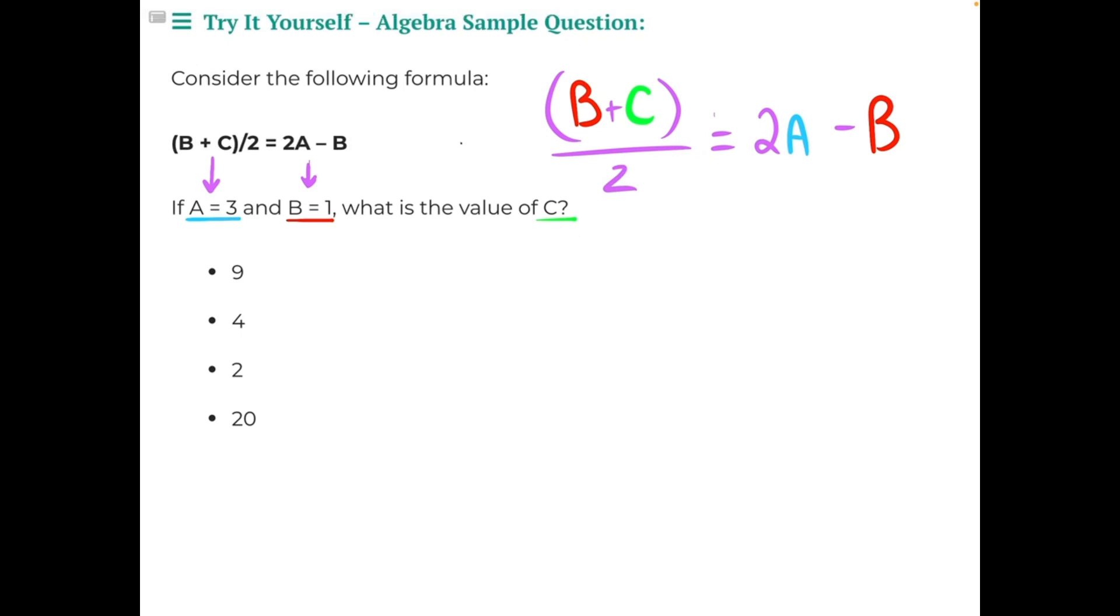We know from left to right, b is going to equal 1. So we'll have 1 plus c divided by 2 equals 2 times 3, because a equals 3, minus b equals 1.